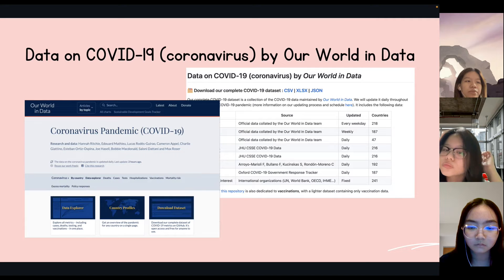First, let's introduce the dataset that we use in the data analysis. The complete dataset is a collection of the COVID-19 data maintained by Our World in Data. As they note with the dataset, the mission of Our World in Data is to make data and research on the world's largest problems understandable and accessible, so this dataset is completely available for contribution as CSV, XLSX, and JSON files on the GitHub repository.